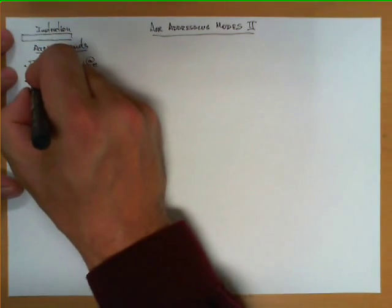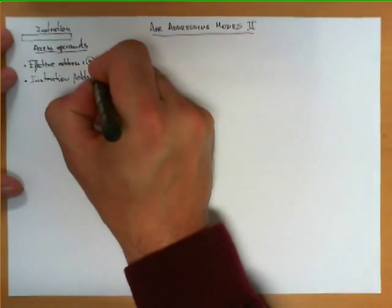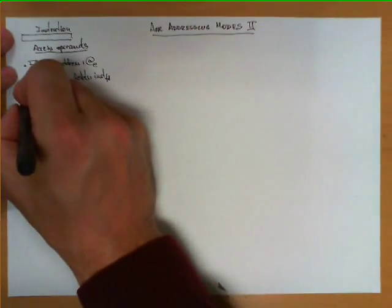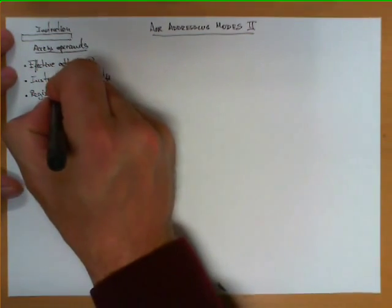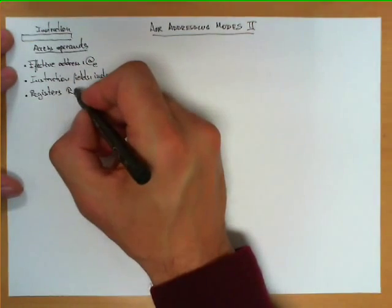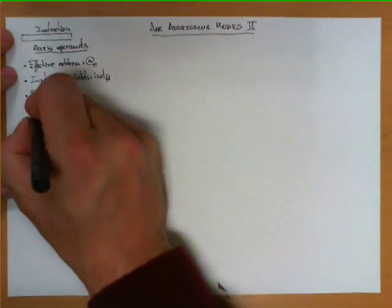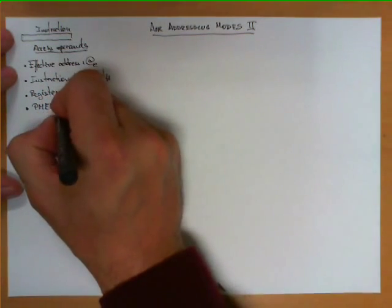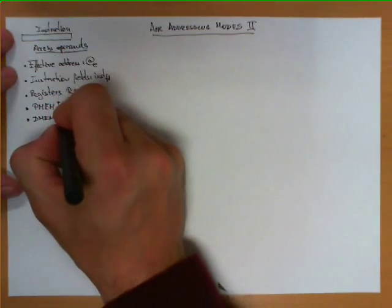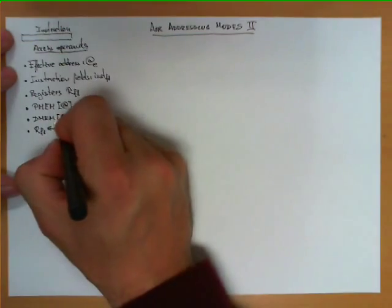We're going to be talking about instruction fields, which are going to represent F sub 1 or F sub 2. We're going to refer to registers — typically registers specified by these fields — so we're going to refer to them as R sub F1, meaning the register specified by the field F1 in the instruction. We'll refer to program memory and data memory like arrays with an address in square brackets, and when there is an operation over a register, we'll denote it with an arrow.